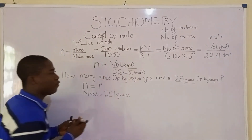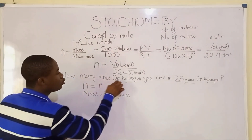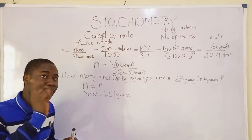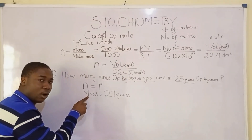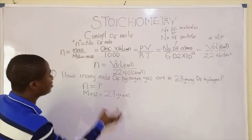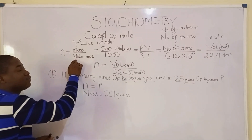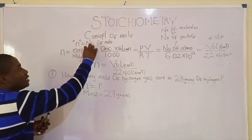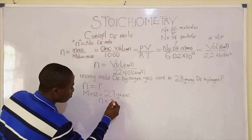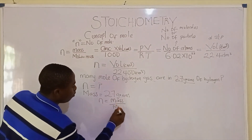They also gave us the element — hydrogen gas — so we need the molar mass, since mass is already given. The formula that has mass is the first formula: number of moles equals mass over molar mass.